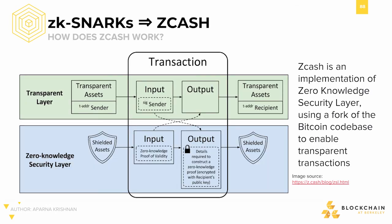Zcash has two layers: a transparent layer and a zero-knowledge security layer, and users transfer their assets between these two layers using the mint and POUR transactions. The reason for having two separate layers is that the fundamental innovation of Zcash was its implementation of the zero-knowledge security layer, while its transparent layer simply started as a fork of the Bitcoin codebase. Users are generally more comfortable with transparent cryptocurrencies they've seen or used in the past, like Bitcoin, so Zcash shouldn't take that away.